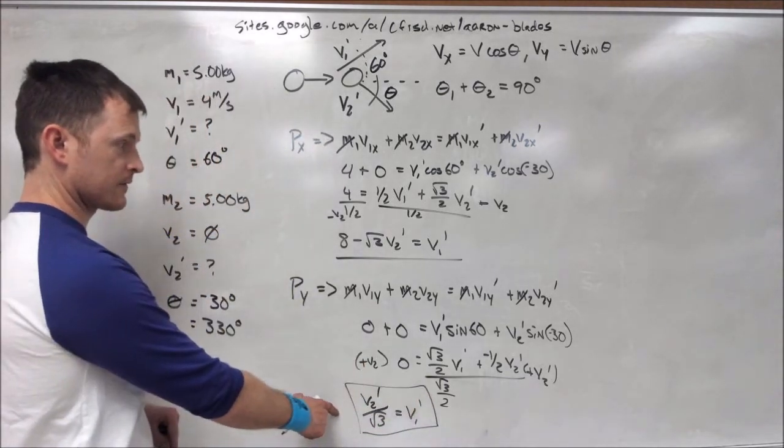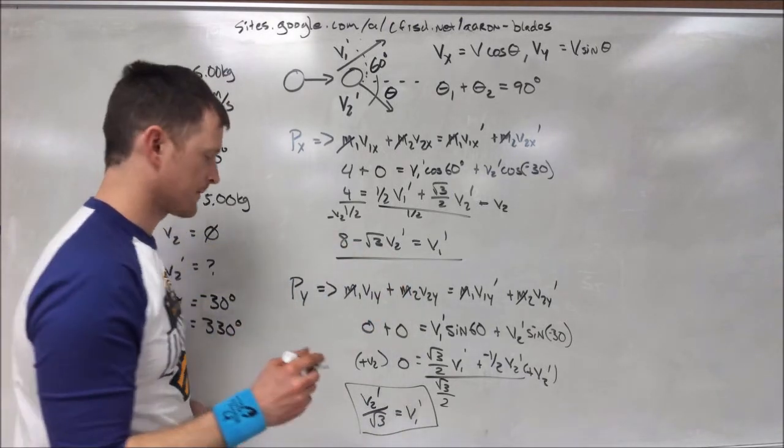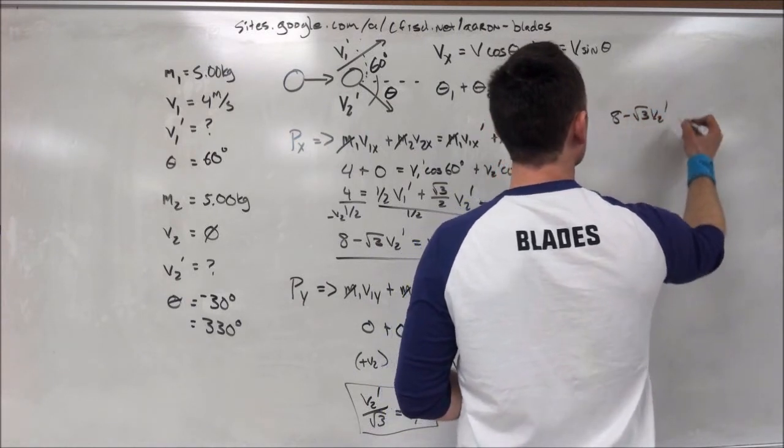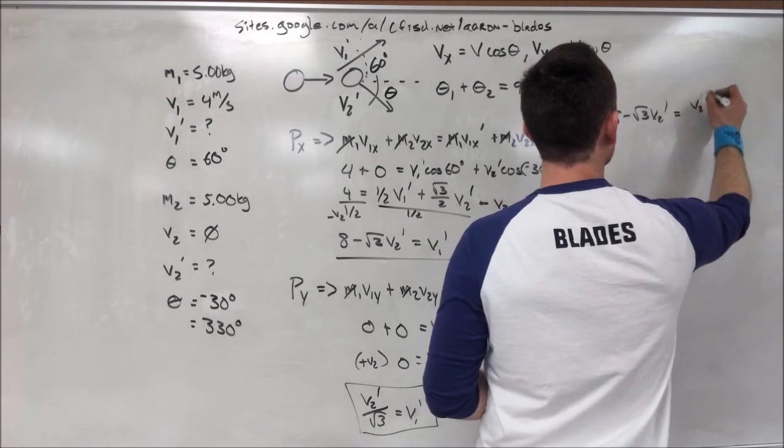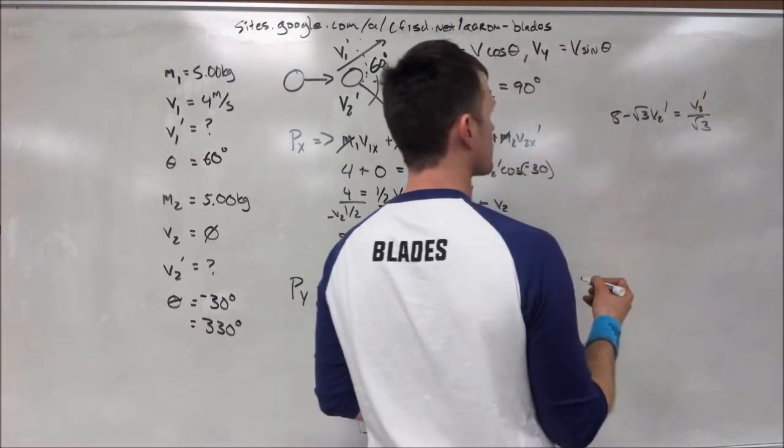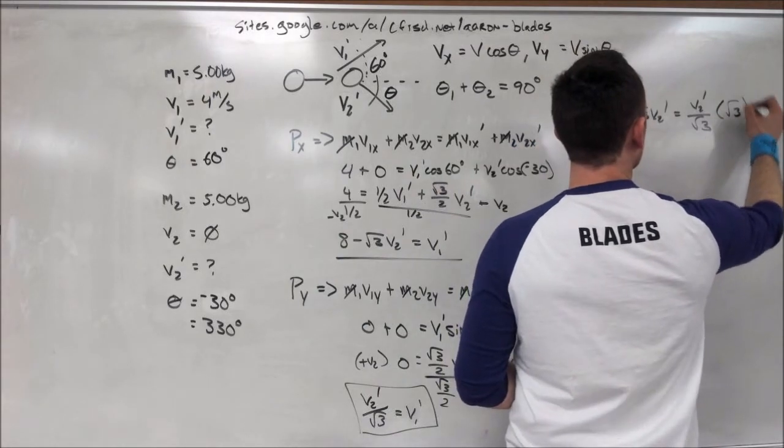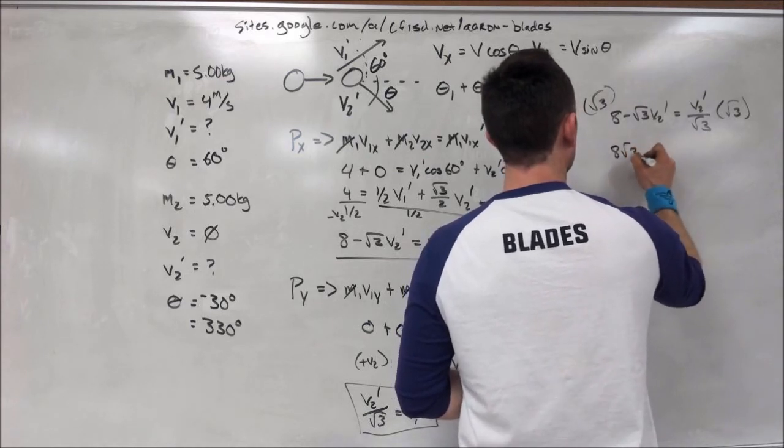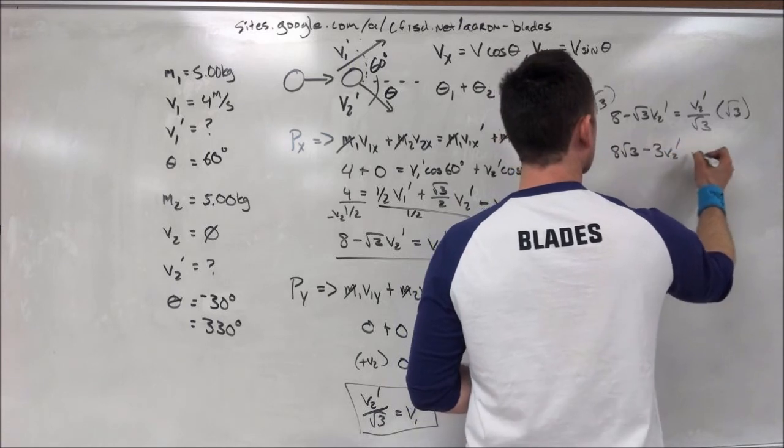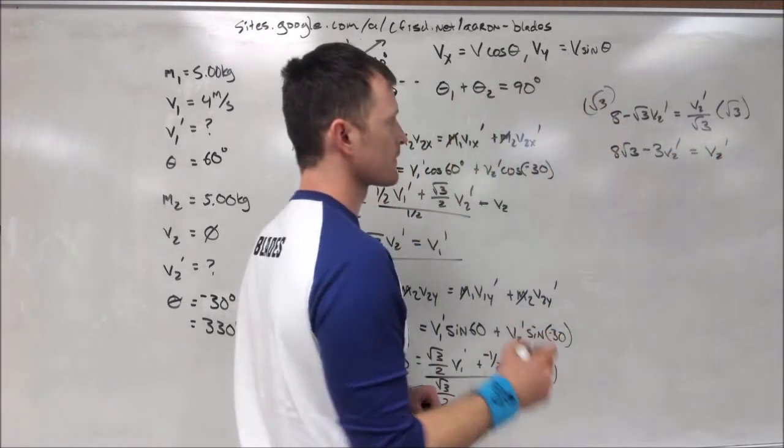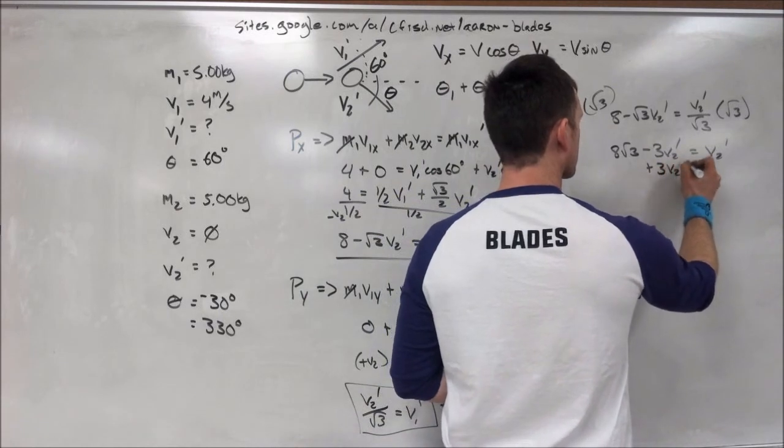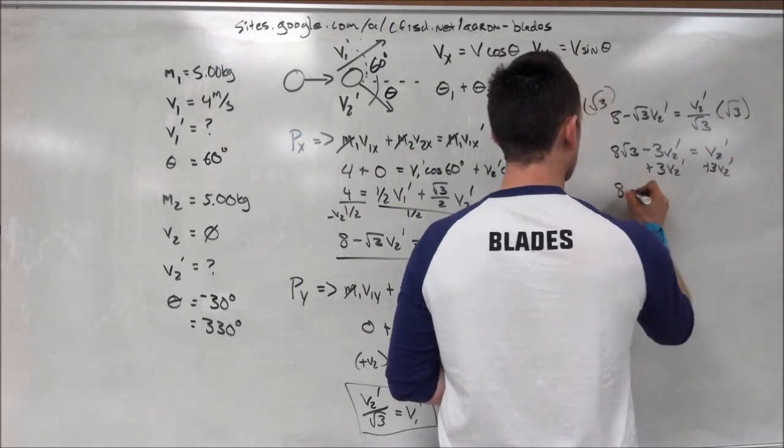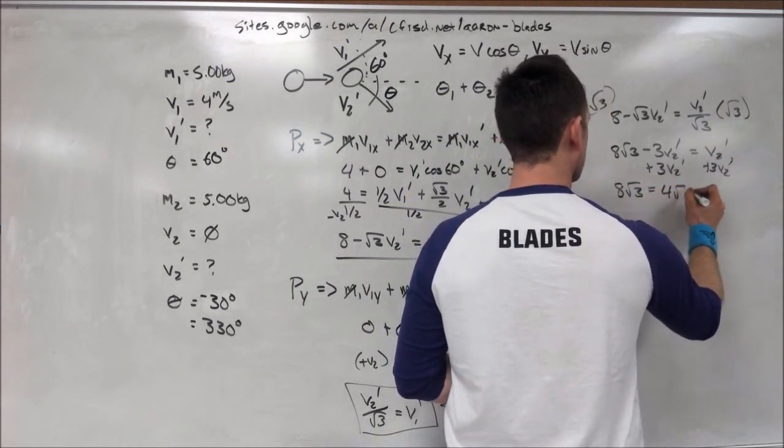And now, we can set those two solutions equal to each other and solve for v2. So, 8 minus square root of 3 times v2 prime is equal to v2 prime divided by the square root of 3. We're going to multiply by the square root of 3 to get rid of that denominator on both sides. And we end up with 8 times the square root of 3 minus 3 v2 prime equals v2 prime. We're going to add 3 v2 prime to both sides.